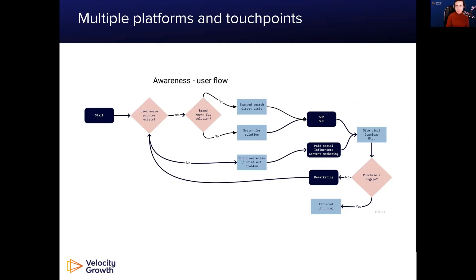For example, in remarketing it could be great to use Facebook, Instagram, or maybe a lower cost one like Twitter. Privacy changes have impacted remarketing, but you can still leverage it to a degree. You can look at all of these different elements to determine what level of intent you need at each stage, what you're looking for from the user, where they're hanging out, and what's the most cost-effective way to reach them.